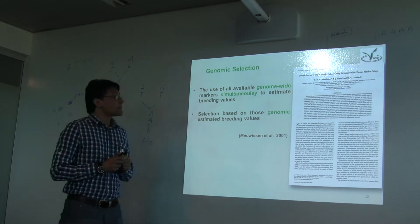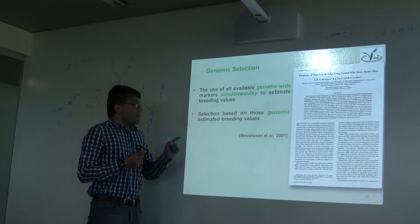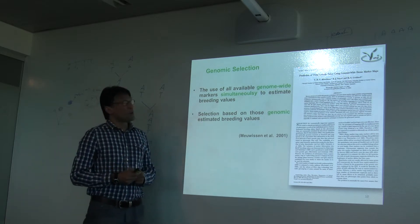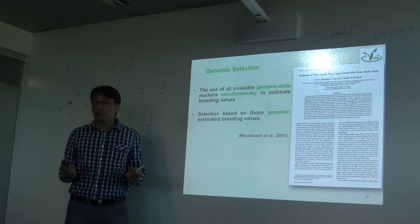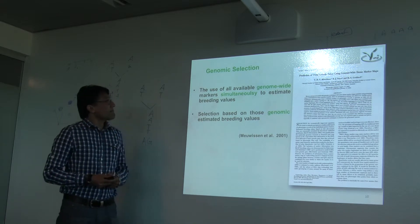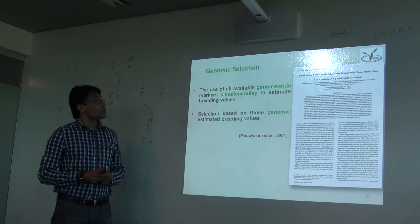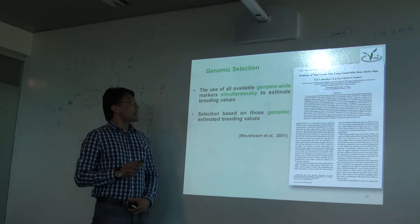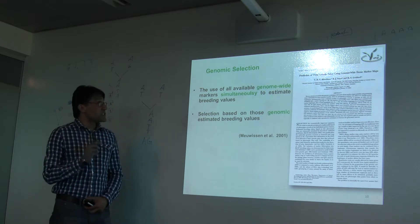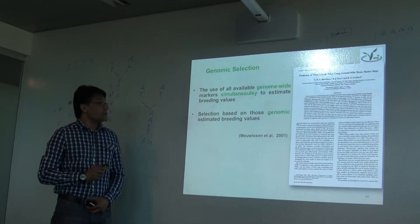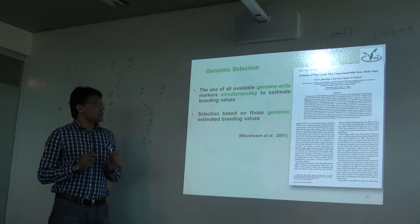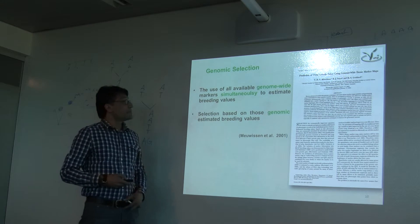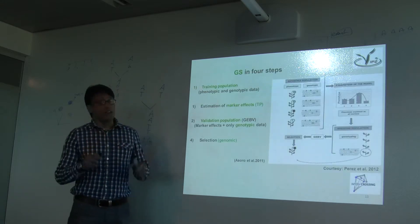Now coming to genomic selection. Meuwissen and his colleagues in 2001 produced a paper which actually gave birth to this methodology — they call it genomic selection. In genomic selection, we use all available markers — genome-wide markers — simultaneously to estimate breeding values, and then we do selection based on those estimated breeding values, or genomic estimated breeding values.